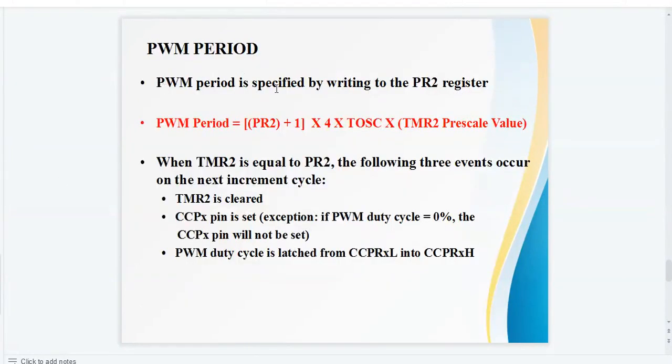PWM period: PWM period is specified by writing to the PR2 register. PWM period equals PR2 plus 1 into 4 into TOSC multiplied by timer 2 pre-scale value.